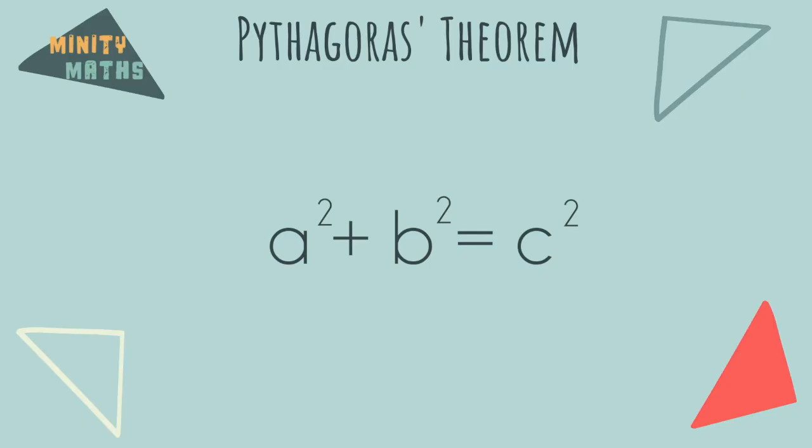Here is the formula a squared plus b squared equals c squared but what does this mean?